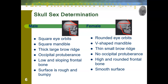Keep in mind, this is not a situation where you must have all of these characteristics to be determined as male or female. Forensic anthropologists look at the average — which characteristics does the skeleton have more of. If you have a mixture of these characteristics, that is normal and happens to everyone.